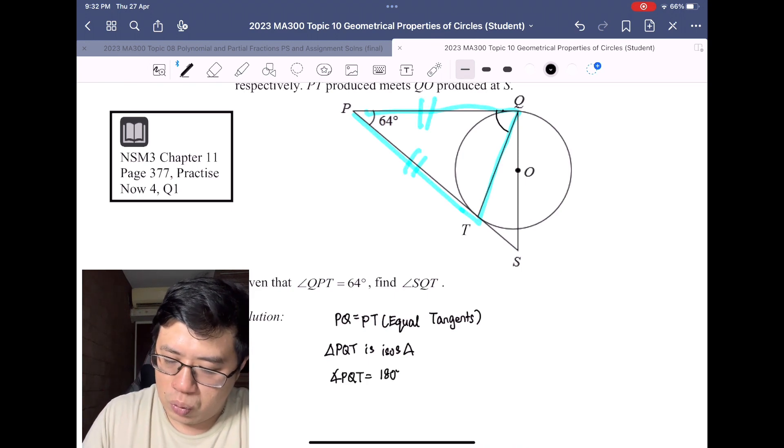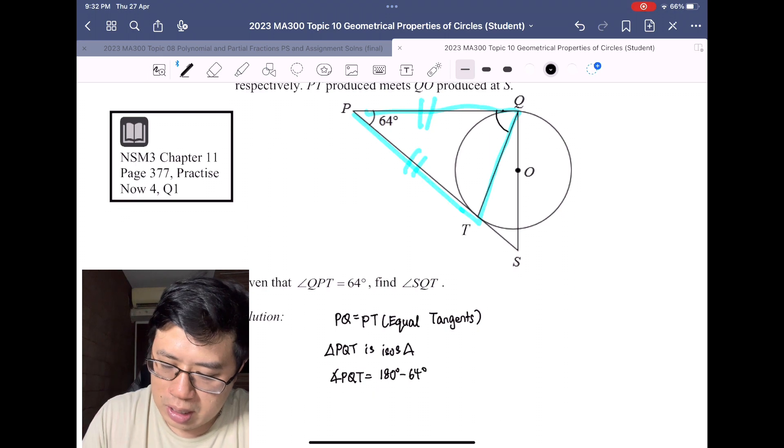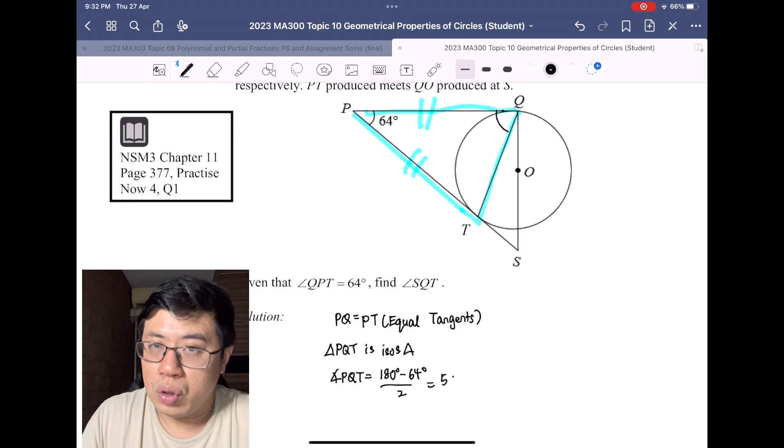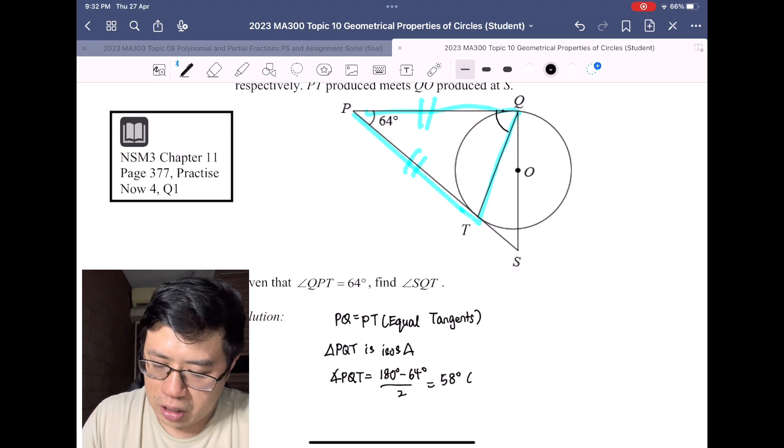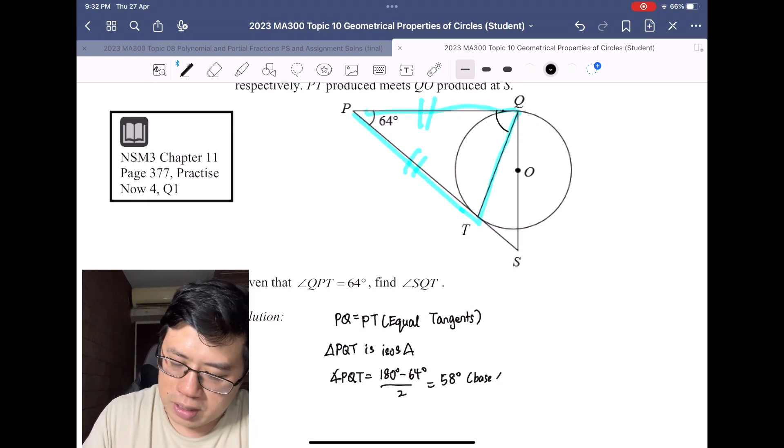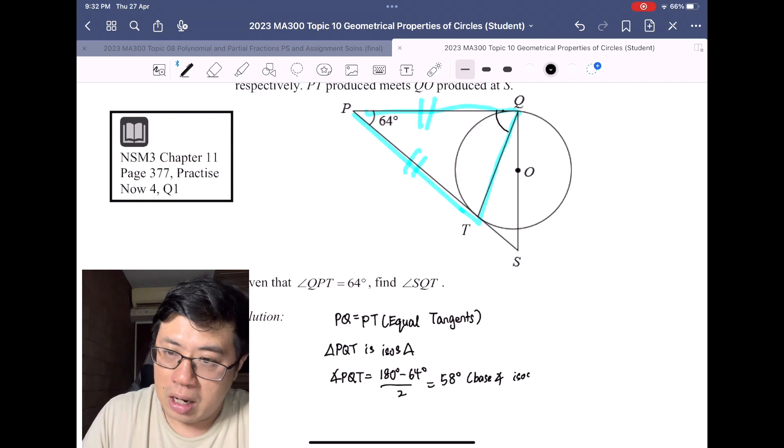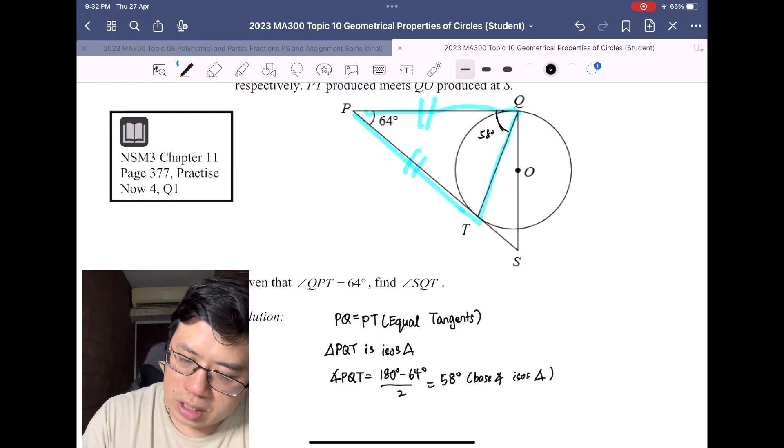From here, next what do we do? You can see that therefore angle PQT will be equal to 180 degrees subtract 64 divided by 2, which gives you 58 degrees. The reason for this is basically just the base angle of an isosceles triangle.